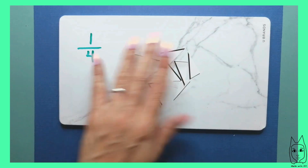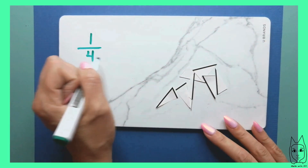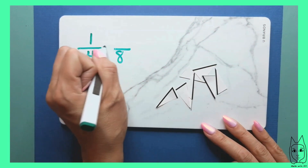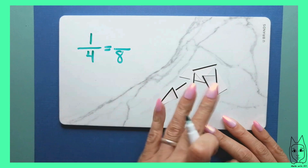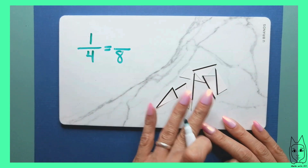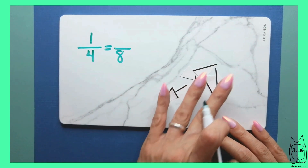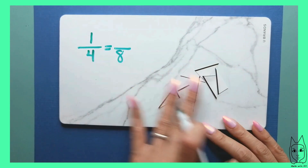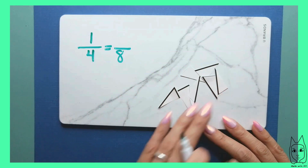So if I cut each of those fourths into two equal parts, I have eight equal parts now. Instead of having the four, I have the eight, but I'm still talking about the same whole — it's still talking about the same thing. That's why they're equivalent: they're still talking about the same whole.